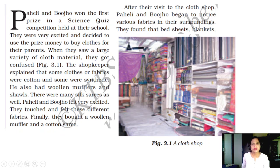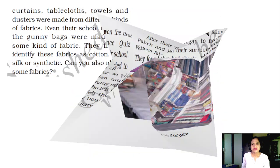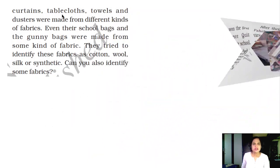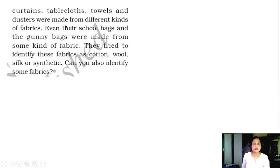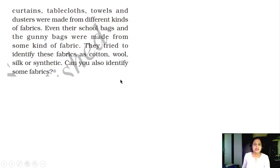After their visit to the cloth shop, Paheli and Gujo began to notice various fabrics in their surroundings. They found that bedsheets, blankets, curtains, table clothes, towels and dusters were made from different kinds of fibers. Even their school bags and gunny bags were made from some kind of fabric. They tried to identify these fabrics as cotton, wool, silk or synthetic. Go home and search for the clothes available at your home. Touch them and feel how they are.